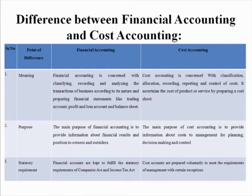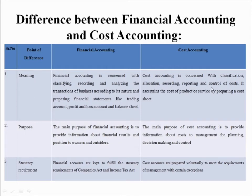First is the meaning. Financial accounting is concerned with classifying, recording, and analyzing the transactions of a business according to its nature, and preparing financial statements like trading account, profit and loss account, and balance sheet. Cost accounting is concerned with the classification, allocation, recording, reporting, and control of cost. It ascertains the cost of a product or service by preparing a cost sheet.